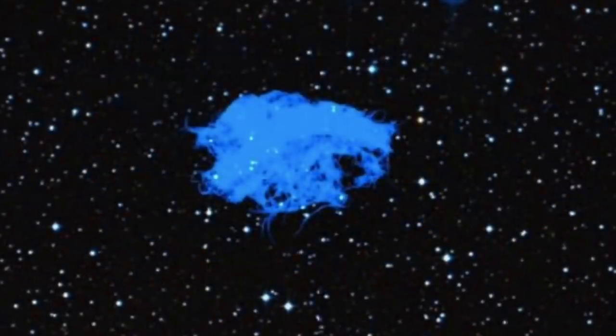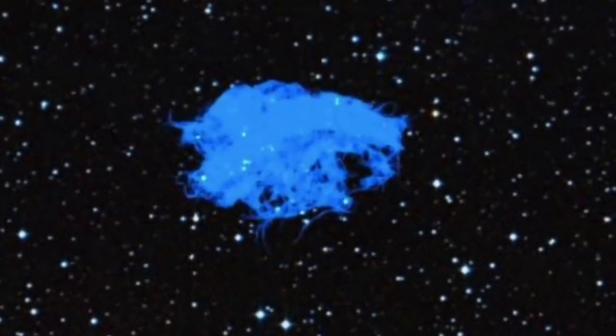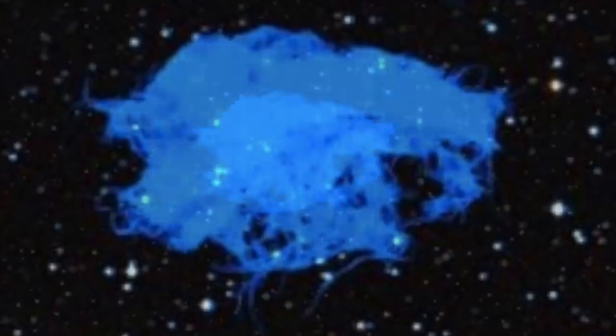One person described the anomaly as looking like a jellyfish. Others agreed and said that it could be a giant organism floating through space. One amateur astronomer said that it doesn't look like anything he's seen before.